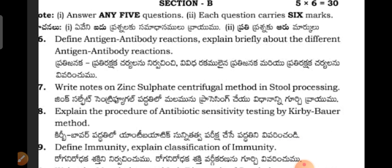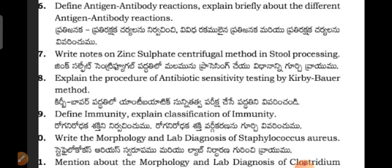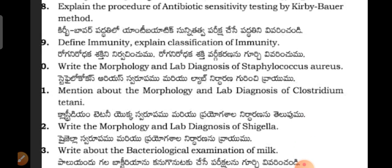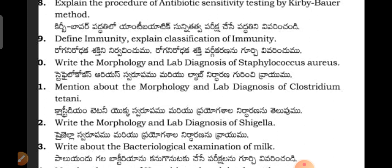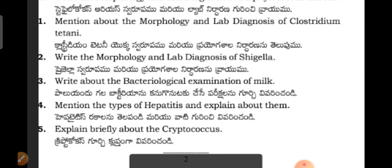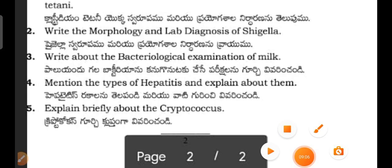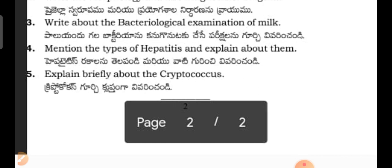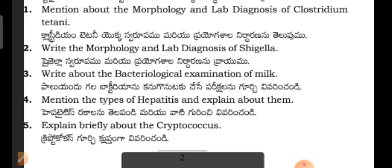Six-mark questions from the model paper: different antigen-antibody reactions, write notes on zinc sulfate centrifugal method in stool processing, explain the procedure for antibiotic sensitivity testing by Kirby-Bauer method, define immunity and explain classification of immunity, write the morphology and lab diagnosis of Staphylococcus, mention morphology and lab diagnosis of Clostridium tetani, write morphology and lab diagnosis of Trichomonas, write about the bacterial examination of milk, mention the types of hepatitis and explain about them, and explain briefly about Cryptococcus.